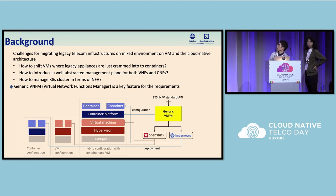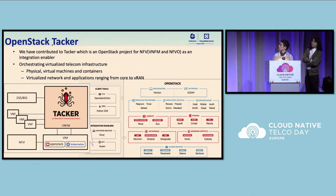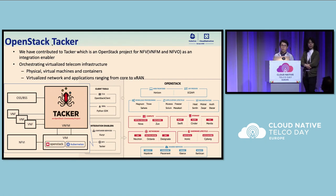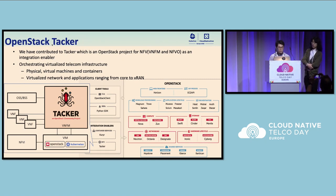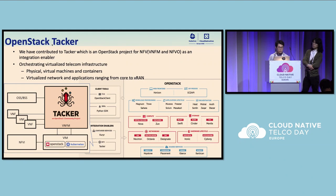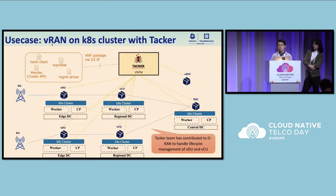Generic VNFM is the key feature. To address such requirements, we have contributed to OpenStack Tacker, which is one of the major projects in OpenStack, with features for controlling VNFs. Orchestrating virtual telecom infrastructure means, for example, managing physical virtual machines and containers, or virtualized network and applications ranging from core to vRAN.